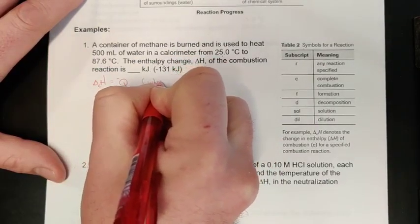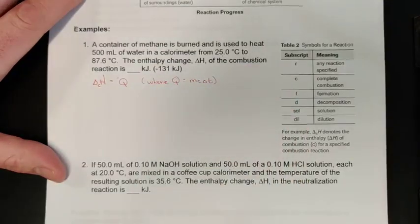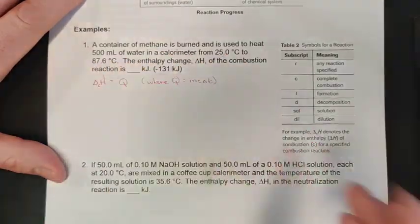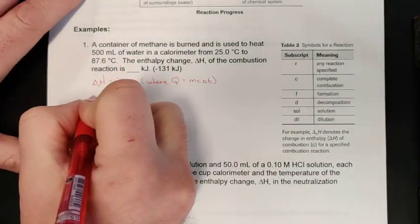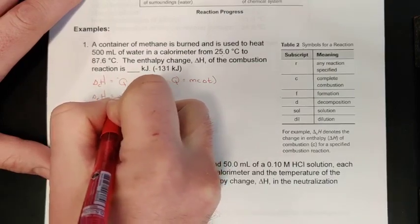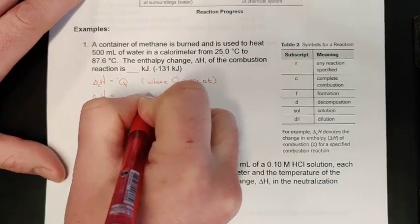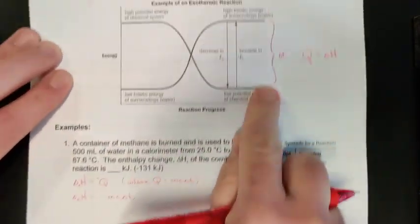Delta H is equal and opposite to q, but we do get to make an assumption again where q can be found as the mc delta t for my surroundings in the calorimeter. I can use the information from my calorimeter to learn about the energy changes of the reaction. The combustion enthalpy for methane is just equal to negative mc delta t.